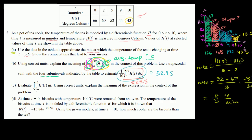We're now on part C. Evaluate the definite integral from 0 to 10 of h prime of t dt. Using correct units, explain the meaning of the expression in the context of this problem.